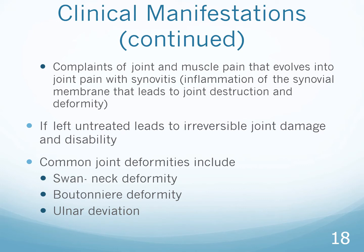Complaints of joint and muscle pain will evolve into joint pain with synovitis. Synovitis is inflammation of the synovial membrane that leads to joint destruction and then deformity. The synovial fluid that protects the joint will wear away — a degenerative change — and when it becomes inflamed due to a trigger or antigen, that leads to joint destruction and deformity. If left untreated, this will lead to irreversible joint damage and potential disability. Common joint deformities include swan neck deformity, boutonnière deformity, and ulnar deviation.